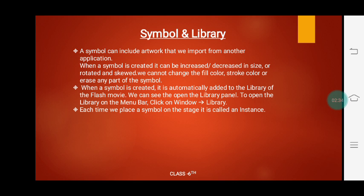For example, suppose we have created a sun or moon and we convert that object into a symbol. Whatever color we have given to that object, that color only will be used in future. This is what the symbol. When a symbol is created, it is automatically added to the library of the Flash movie. When we convert an object into a symbol, it is automatically added to the library.